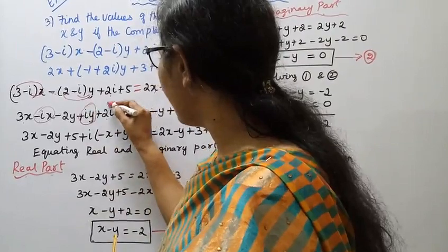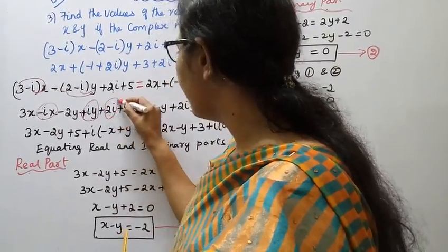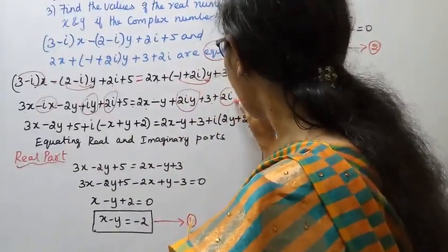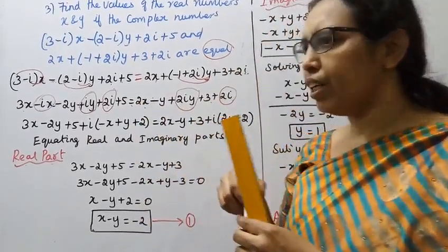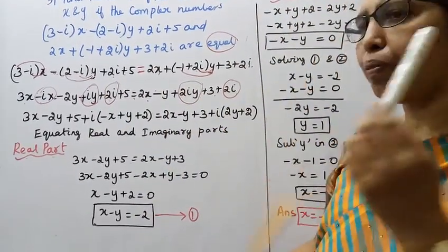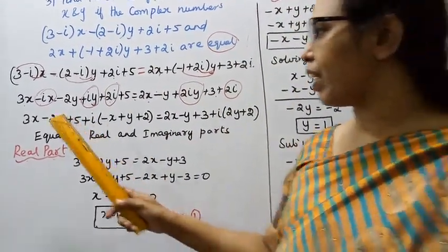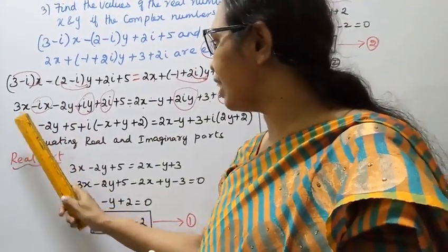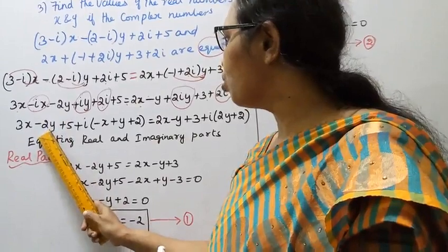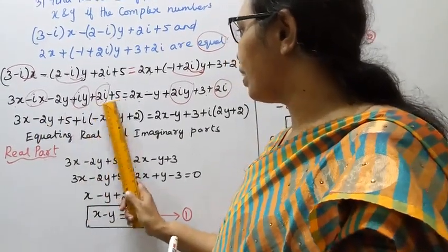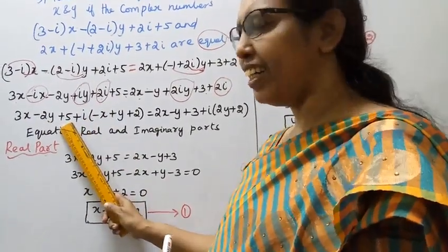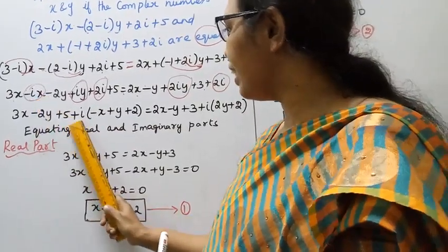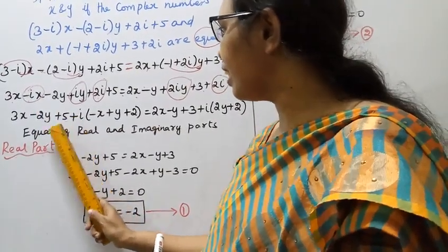There is a correction here — a pencil mistake was made. After fixing, the real part is 3x minus 2y plus 5, and the imaginary part involves i terms for the left-hand side.